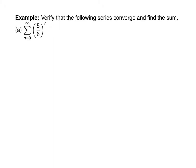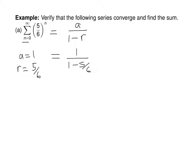Verify that these series converge. In part a, this is a geometric series with a equal to 1 and r equal to 5 sixths. Since 5 sixths is less than 1, this converges, and notice our sum begins at 0. So this converges to a over 1 minus r: 1 over 1 minus 5 sixths, which is 1 divided by 1 sixth, which is 6.